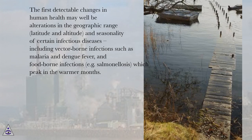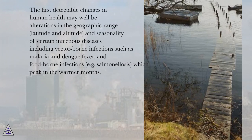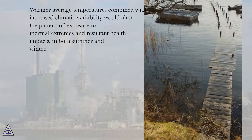The first detectable changes in human health may well be alterations in the geographic range, latitude and altitude, and seasonality of certain infectious diseases, including vector-borne infections such as malaria and dengue fever, and foodborne infections, for example salmonellosis, which peak in the warmer months. Warmer average temperatures combined with increased climatic variability would alter the pattern of exposure to thermal extremes and resultant health impacts, in both summer and winter.